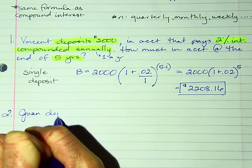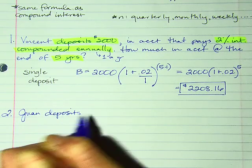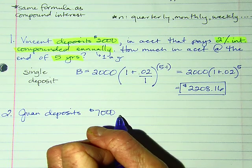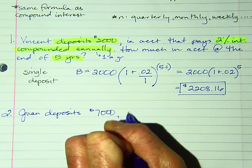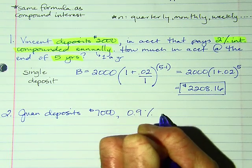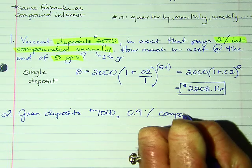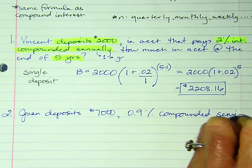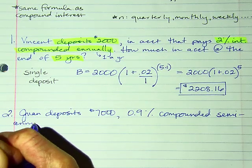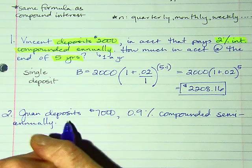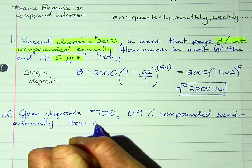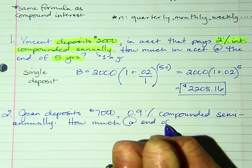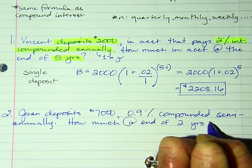Next one: Juan deposits $7,000. The account pays 0.9% interest compounded semi-annually. How much is in the account at the end of two years?